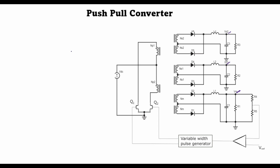Let's look at the operation of this push-pull converter in a little more detail. The input DC voltage is applied to the center-tap transformer, and one end of each half-primary is connected to the transistors Q1 and Q2. The control loop is similar to what we saw for the buck converter — if you haven't watched that lecture you can click the link. The only difference here is that pulses which are 180 degrees out of phase are used to drive Q1 and Q2.